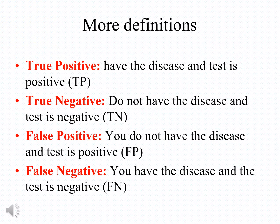In the next slide, I will try to clarify some more definitions. A true positive result means the person has the disease and the test is positive. A true negative means the person does not have the disease and the test is negative. A false positive refers to people who do not have the disease but the test is positive. A false negative means the person has the disease but the test is negative. These definitions are important as you will see later in the presentation.